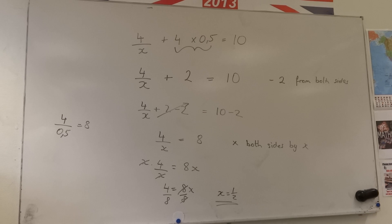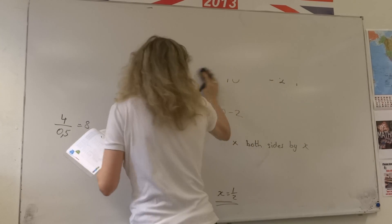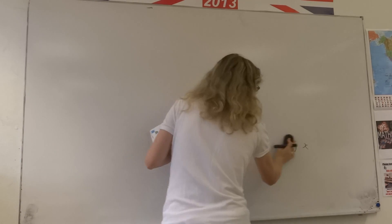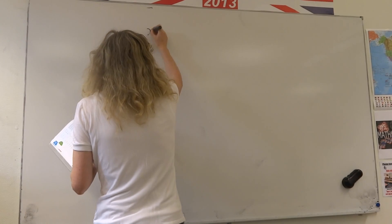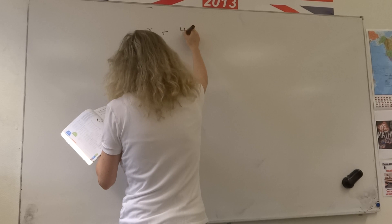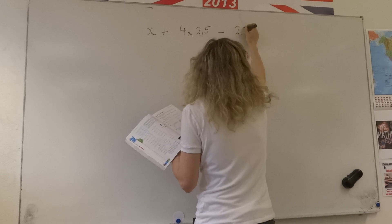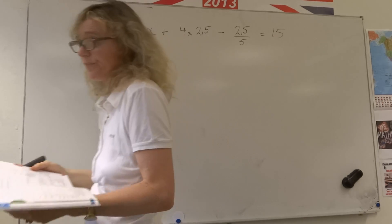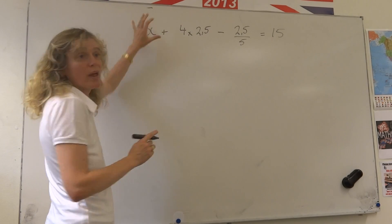Then we've got another one that's a little bit similar here. Where we have x plus 4 times 2 and a half minus 2 and a half divided by 5 equals 15. We do the same thing here, but first of all we work out all the sums and just ignore the x. So we're not allowed to do anything with addition and subtraction, but we are supposed to multiply and divide first.